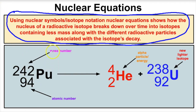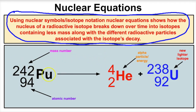This nuclear equation tells us that this radioactive isotope is going to decay and break down. Looking at the right-hand side of the arrow, it's going to produce a helium nucleus — basically an alpha particle — as well as a lighter isotope of uranium. So this nuclear equation shows us that this radioactive isotope of plutonium breaks down to produce an isotope of uranium and an alpha particle.